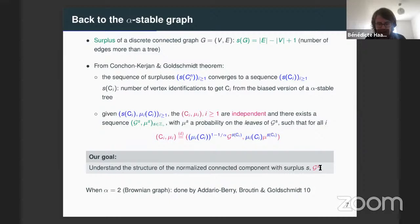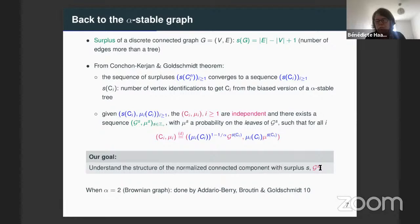All the results I will present have similar counterparts in the alpha equal to two case for the Brownian graph. This was done in the work by Addario-Berry, Broutin, and Goldschmidt. So we will get the heavy-tail counterpart of their results.